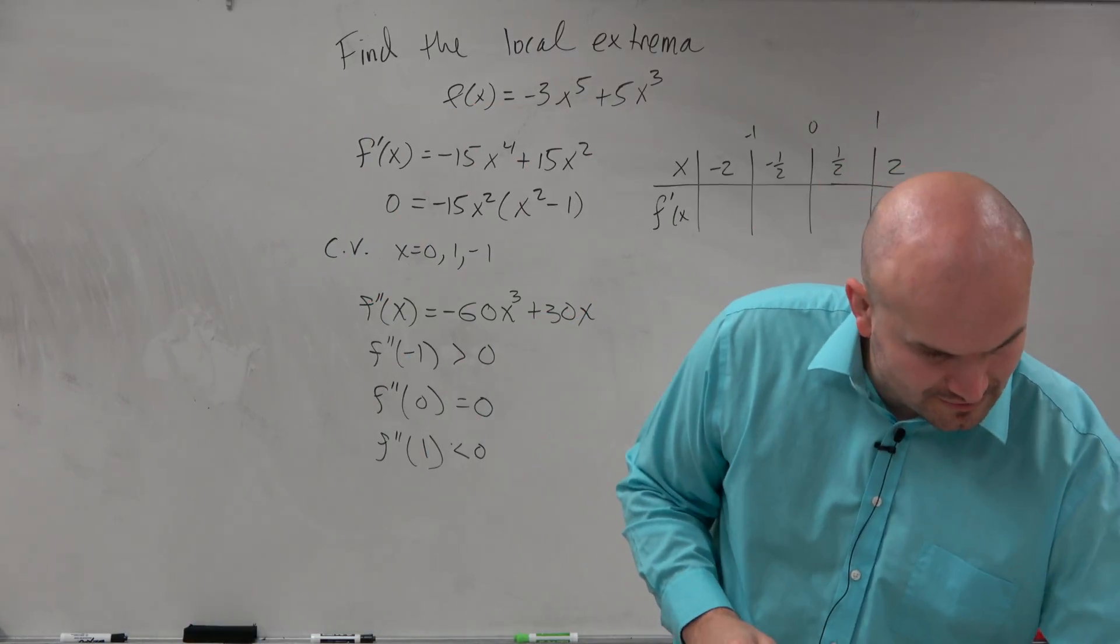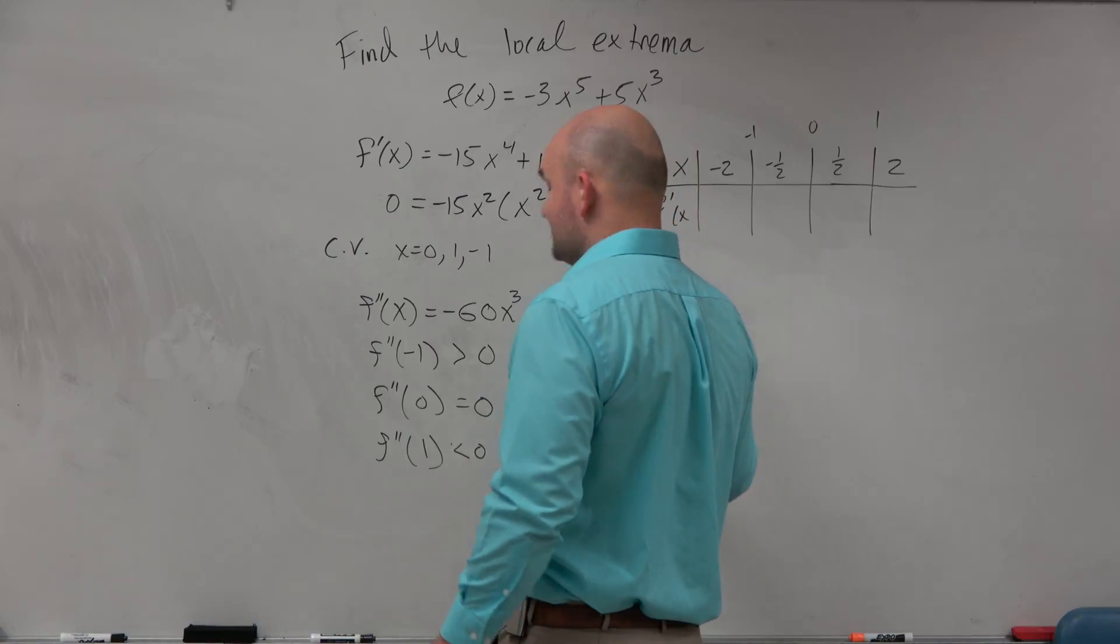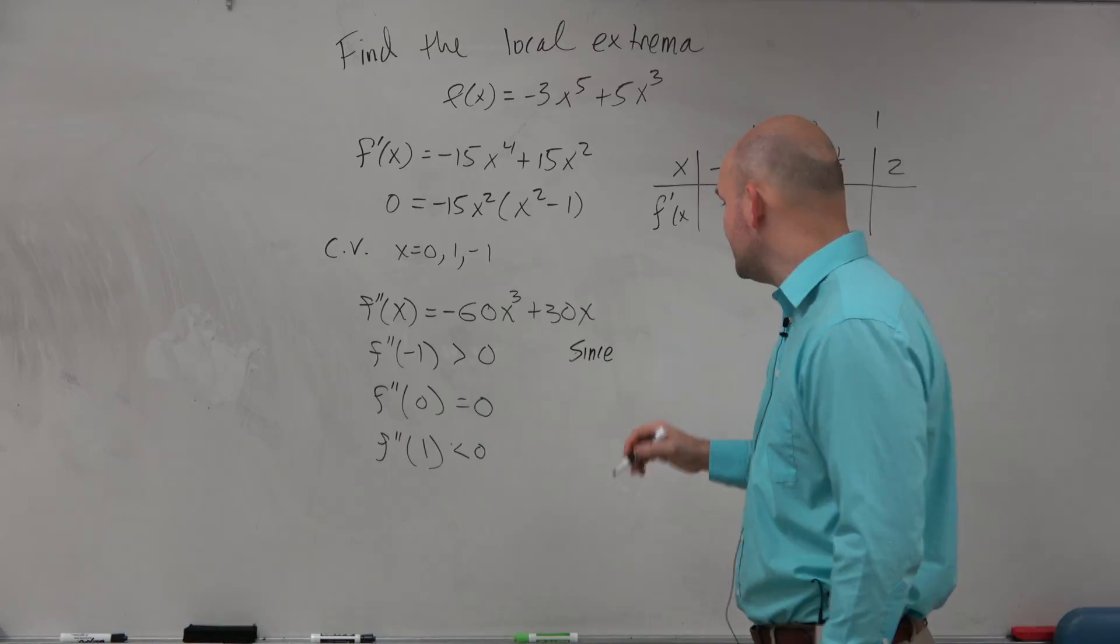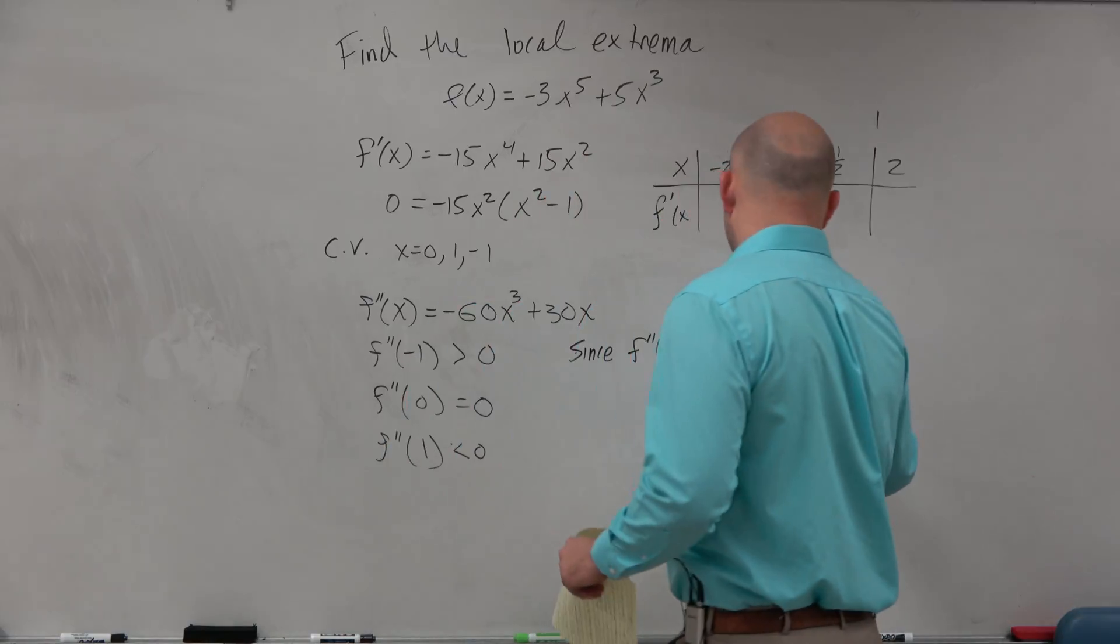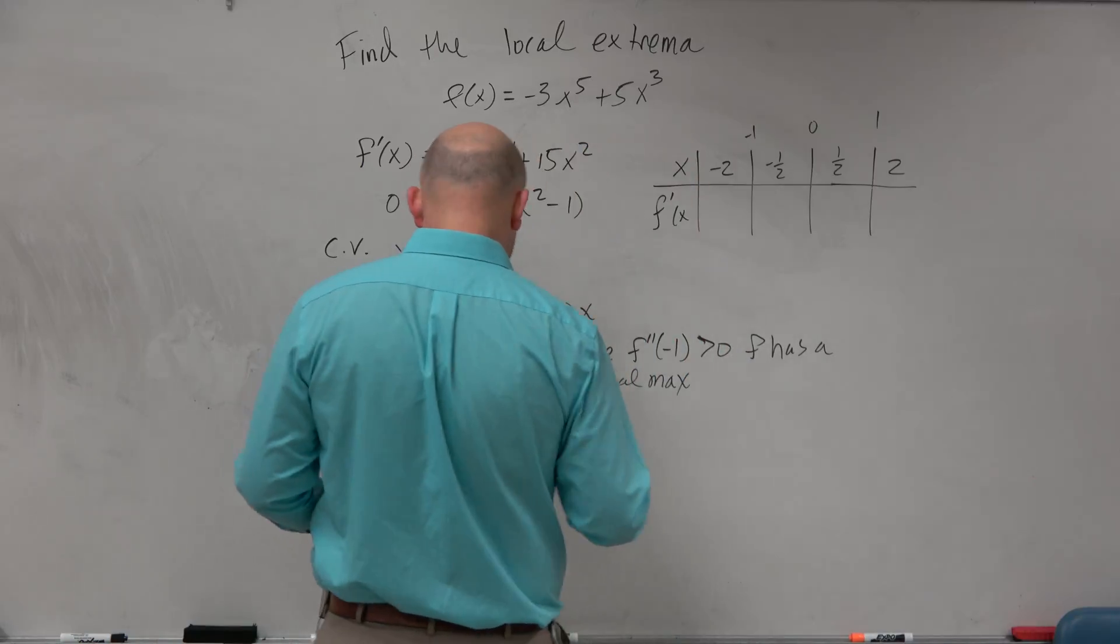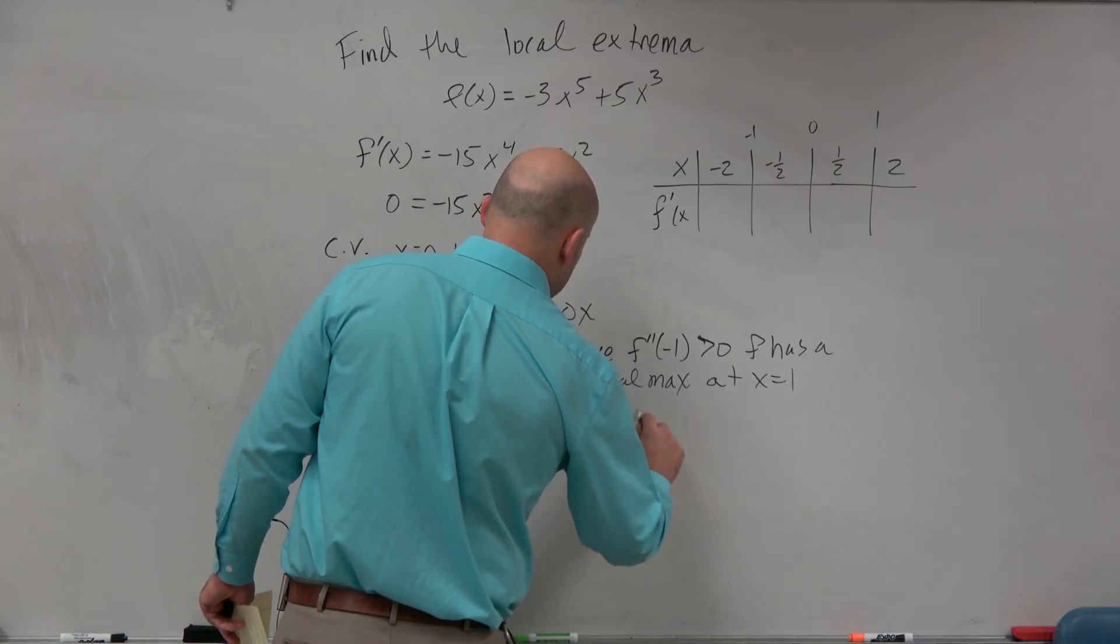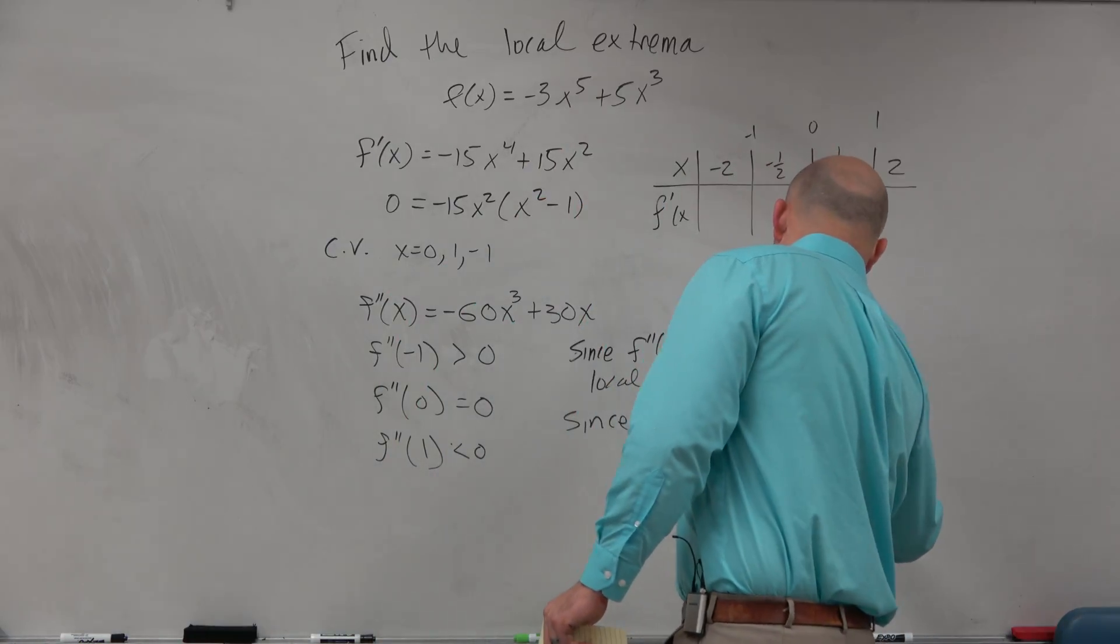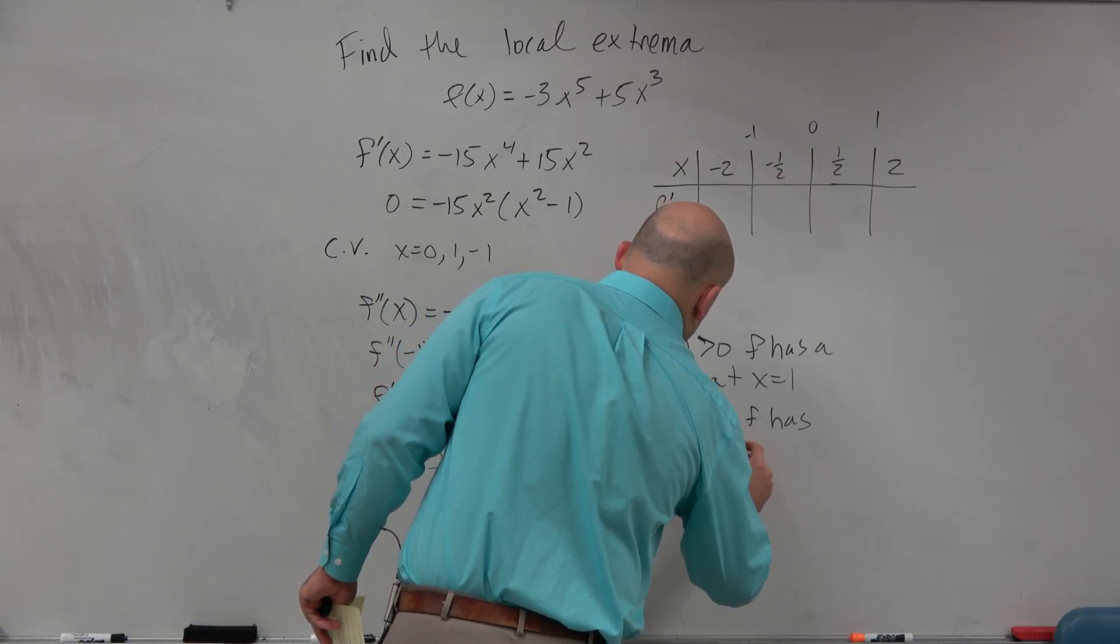So my justification, which I'm going to write here, is since f double prime of negative 1 is greater than 0, f has a local max at x equals negative 1. And since f double prime of positive 1 is less than 0, f has a local min at x equals 1.